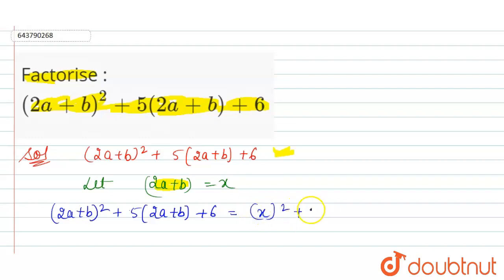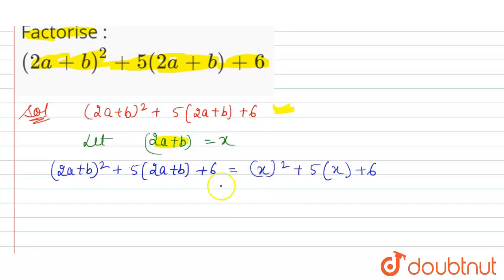So we can write it as x² + 5x + 6. Now split 5x in such a way that if we multiply those values we get 6x², and if we add those values we get 5x.